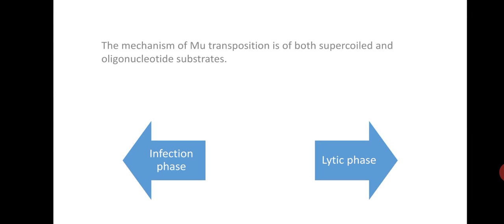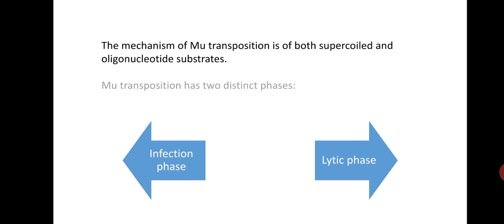The mechanism of mu transposition involves both supercoiled and oligonucleotide substrates. Mu transposition has two distinct phases: first is the infection phase, also called the lysogenic phase, and second is the lytic phase.